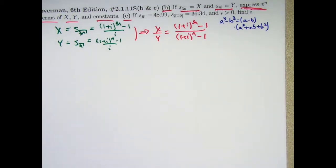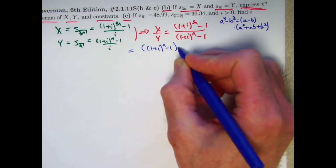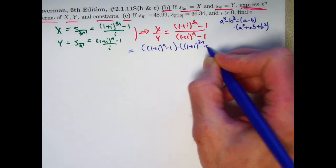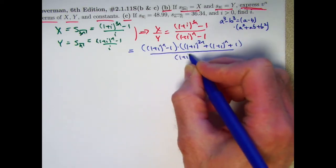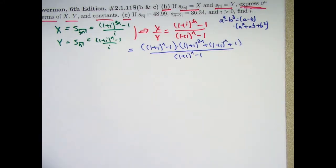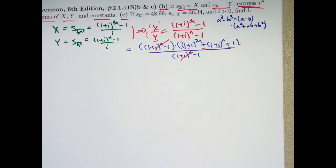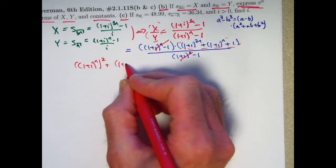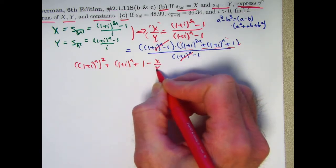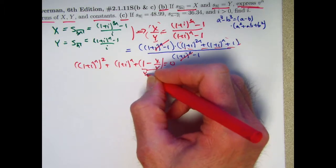a cubed minus b cubed equals a minus b times a squared plus a times b plus b squared. So I can use that identity here with the role of a being played by 1 plus i to the n and the role of b being played by 1. Let's factor the top. We get 1 plus i to the n minus 1 in parentheses times 1 plus i to the 2n plus 1 plus i to the n times 1 plus 1 squared is 1. All divided by what's on the bottom. We get some cancellation here. This divides out with this leaving a 1. All we're left with is this thing equaling x over y. That's a quadratic equation in the quantity 1 plus i to the n.